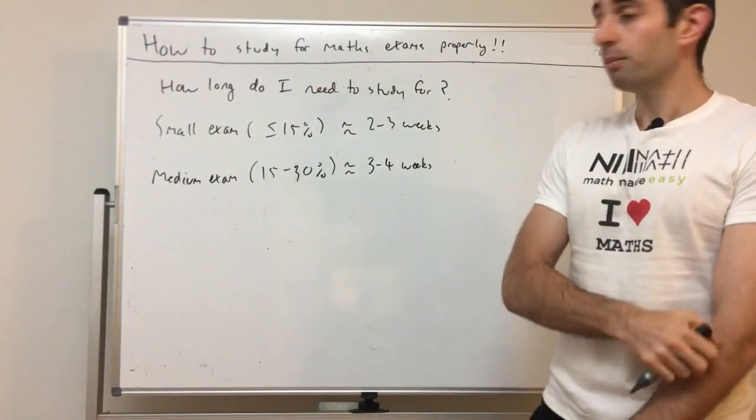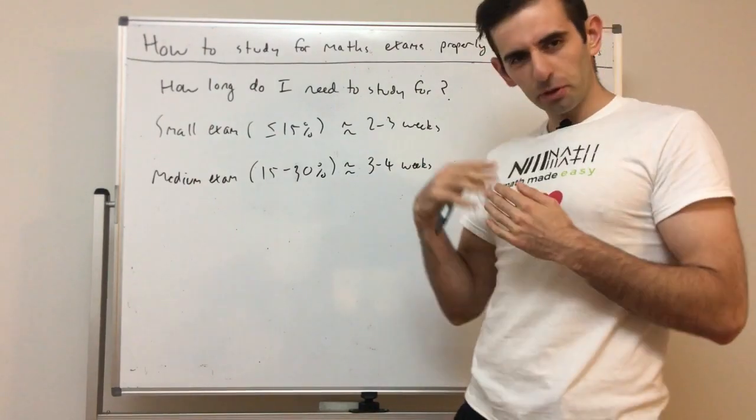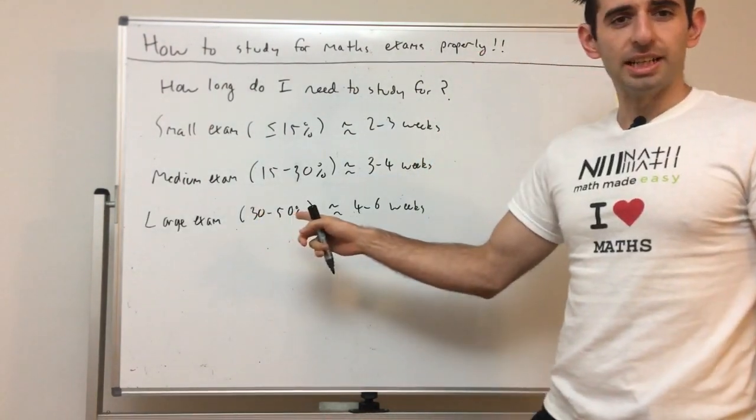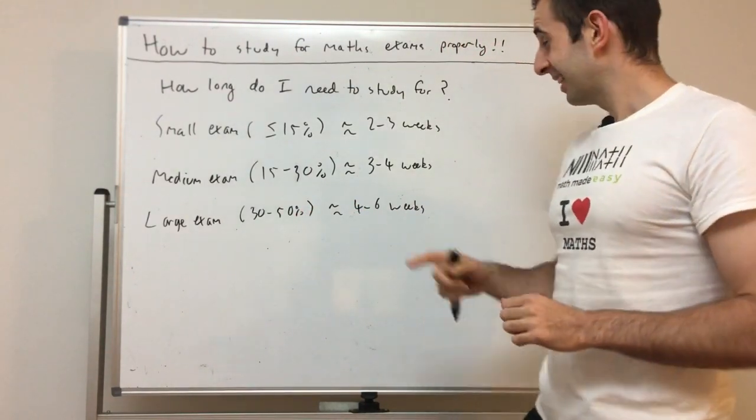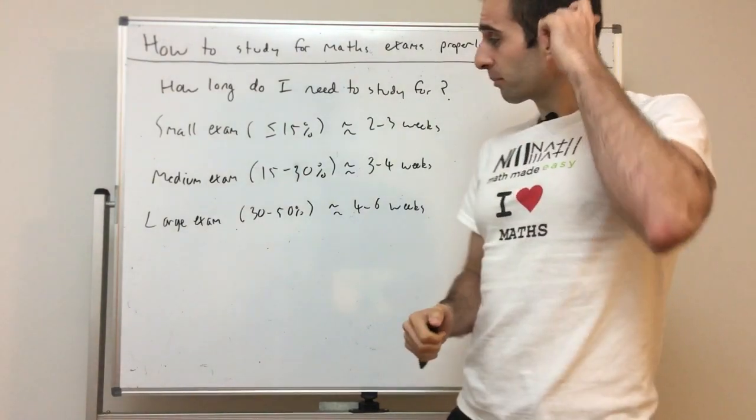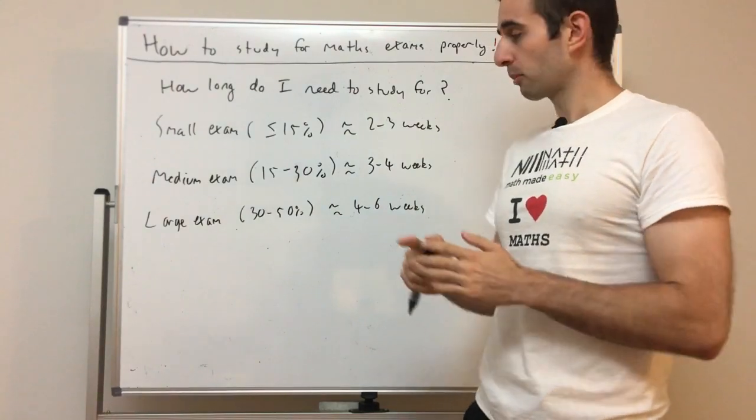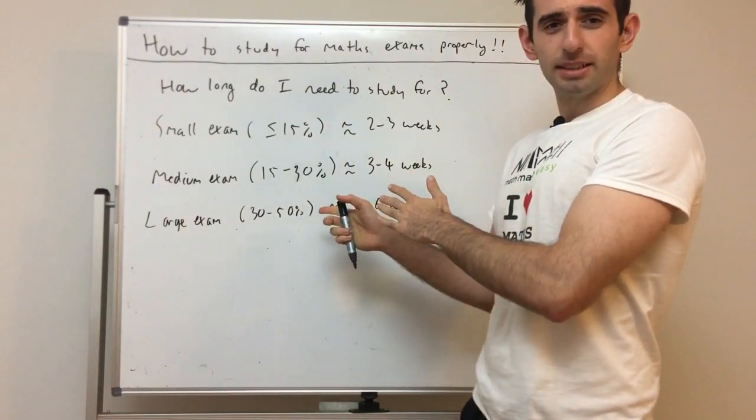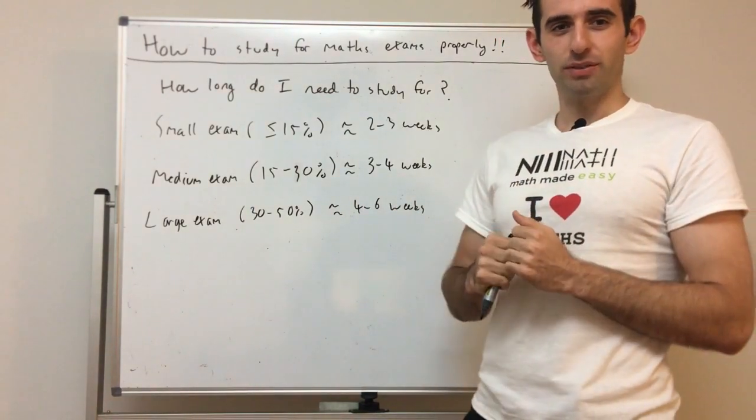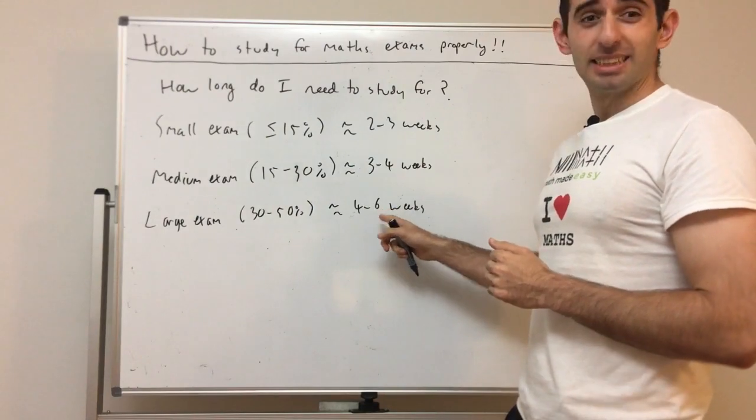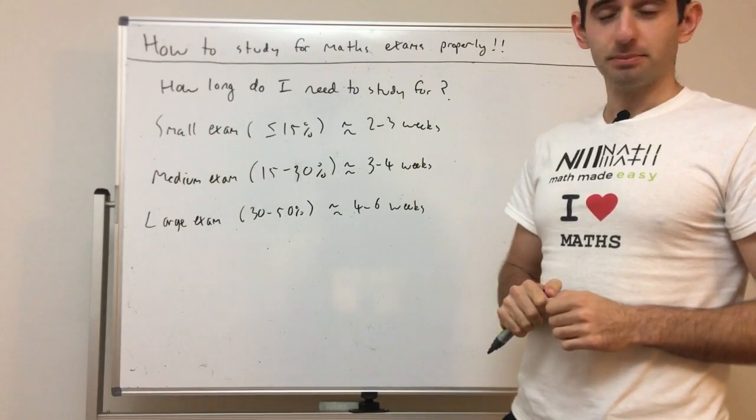A large exam is something between 30 and 50 percent. That's massive. We're going to need at least four to six weeks. I teach HSC maths mainly in Sydney, New South Wales. A large exam like this would be an HSC trial - the exams students do before their final exam in year 12. I recommend at least six weeks because that's usually a 40% exam, so we're going to need at least six weeks to do that properly.